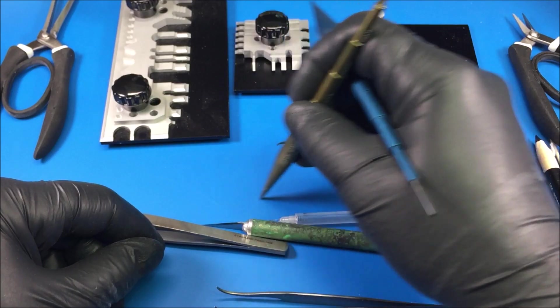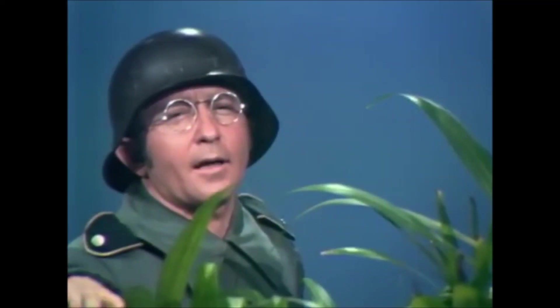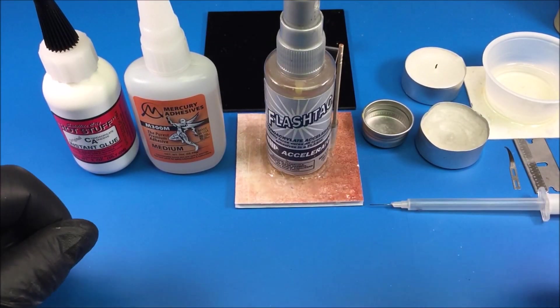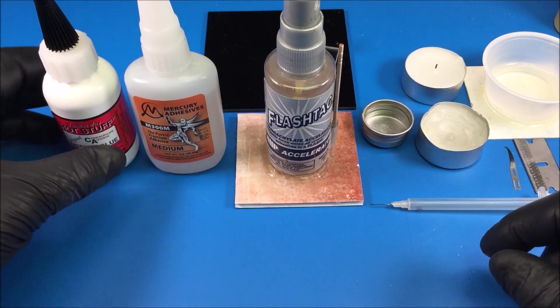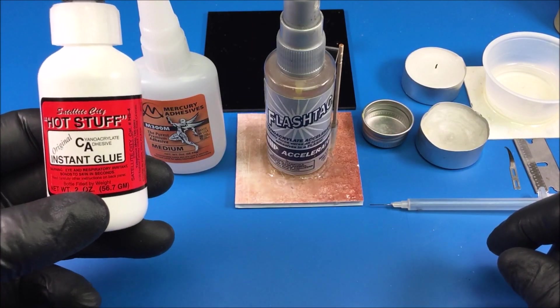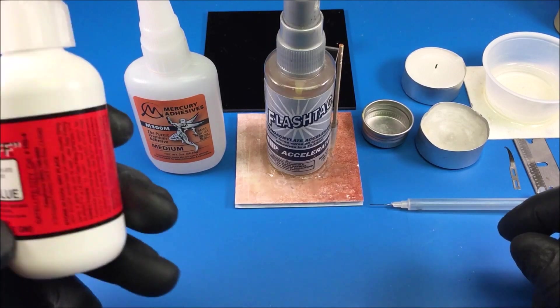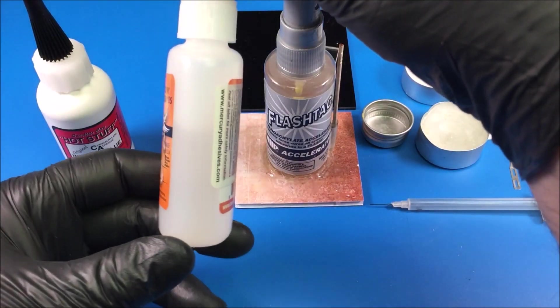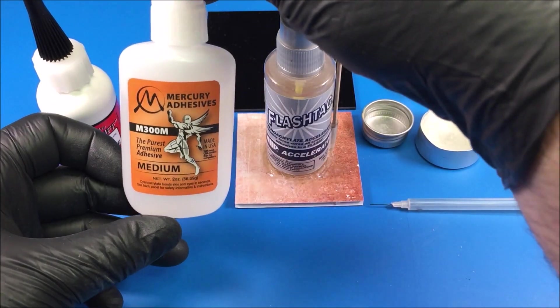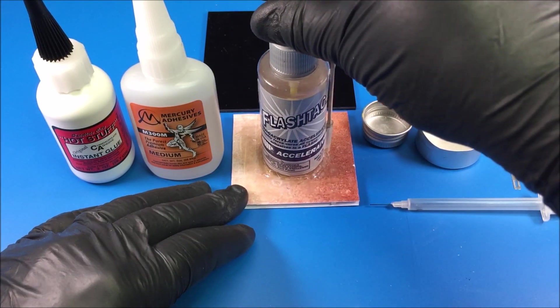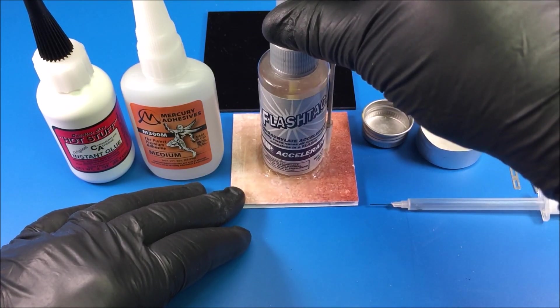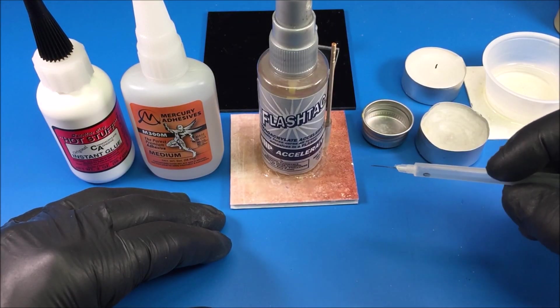Very interesting. These are some of the glues and applicators I use when I'm putting photo etch together. This is a thin super glue, it's like water, and this is a medium super glue, a little thicker for bigger pieces.